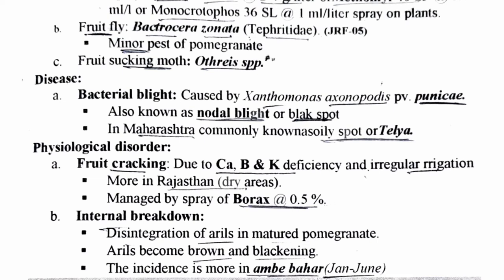There are two physiological disorders: fruit cracking and internal breakdown. Fruit cracking is caused by calcium deficiency, boron and potassium deficiency, and irregular irrigation. Since it is related to irrigation, it is more common in dry areas like Rajasthan. Management: spray borax at the rate of 0.5 percent.